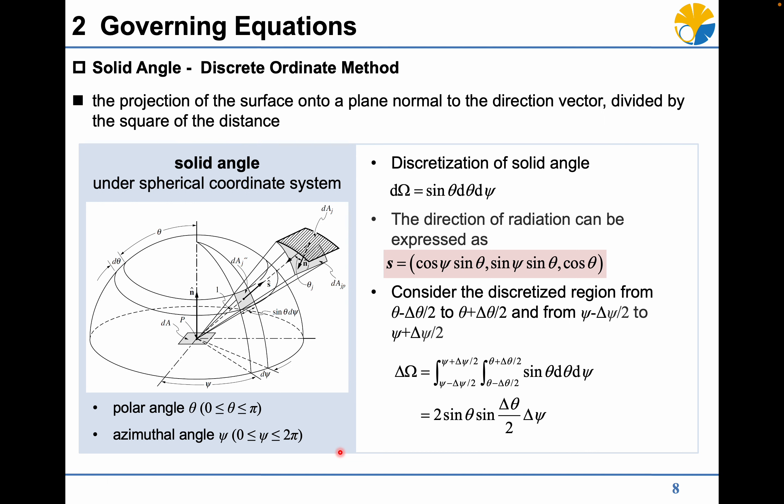The solid angle can be expressed by polar angle and azimuthal angle, so that the direction vector can be expressed by these two angles. Then, the so-called discrete ordinate method is employed to solve radiation intensity in entire solid angles in our study.